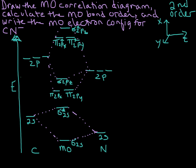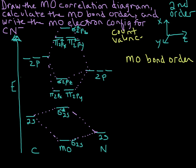Now we're going to use this to figure out the bond order and the electron configuration. Let's do the molecular orbital bond order first. I've drawn a valence molecular orbital correlation diagram, so we're going to count valence electrons. For cyanate: 4 from carbon, 5 from nitrogen, plus 1 for the anion — we're going to end up with 10 valence electrons.